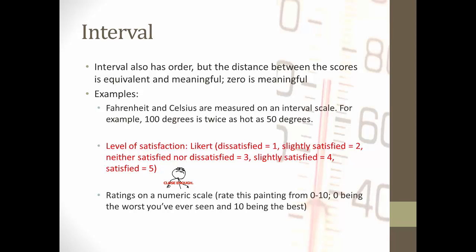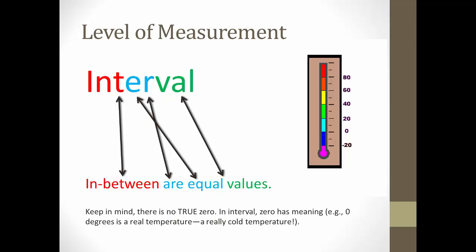Now, ratings on a numeric scale, rate something from zero to ten, zero being the worst you've ever seen and ten being the best. That would be interval. You would expect people to be rating it one away from the next. But zero would also be meaningful. That means when somebody rates something zero, you know it means something. It's not the absence of something, it's actually saying the worst is zero. So, pulling apart interval, you can see that interval means in between are equal values. Now, keep in mind, there's no true zero. In interval, zero has meaning. Zero degrees is a real temperature, a really cold temperature.